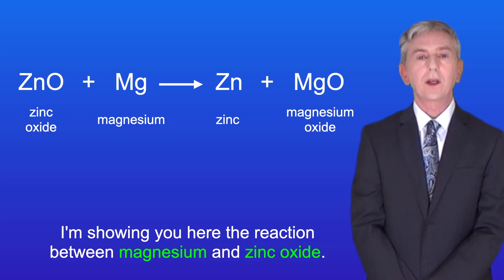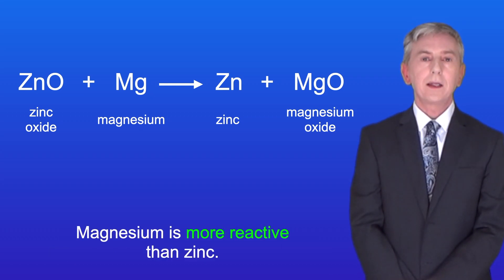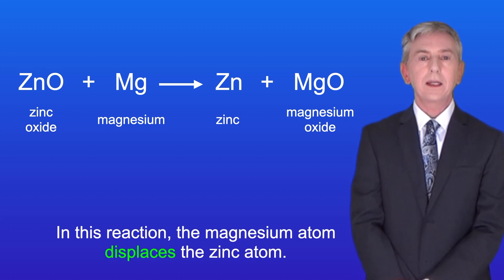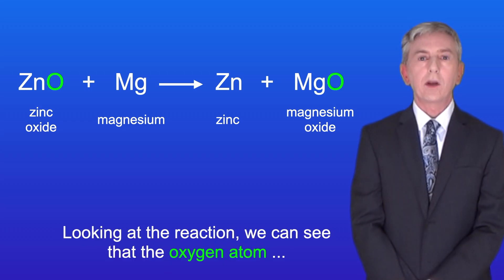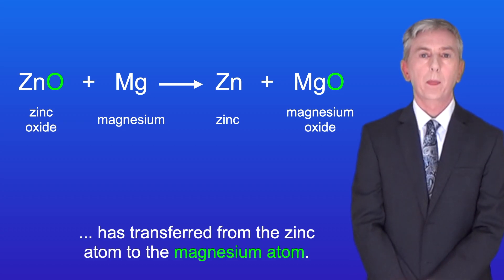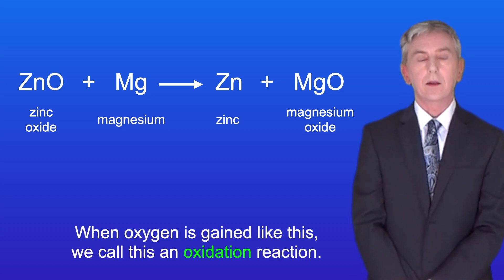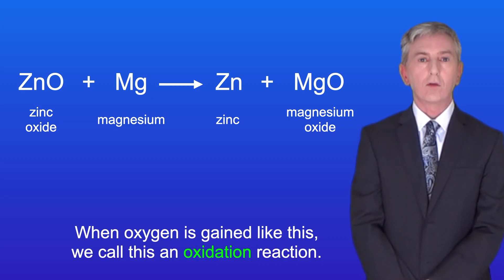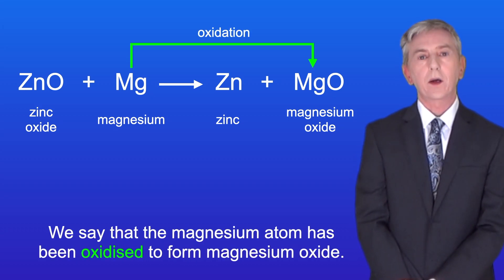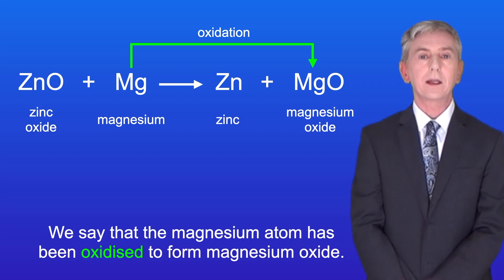I'm showing you here the reaction between magnesium and zinc oxide. Magnesium is more reactive than zinc, so in this reaction the magnesium atom displaces the zinc atom. Looking at the reaction, we can see that the oxygen atom has transferred from the zinc atom to the magnesium atom. When oxygen is gained like this, we call this an oxidation reaction. We say that the magnesium atom has been oxidised to form magnesium oxide.